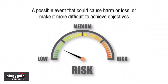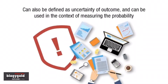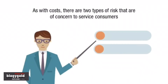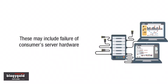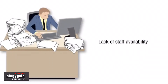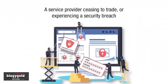Risks are defined as a possible event that could cause harm or loss, or make it difficult to achieve objectives. Risk can also be defined as uncertainty of outcome, and can be used in the context of measuring the probability of positive outcomes as well as negative outcomes. As with costs, there are two types of risks that are of concern to service consumers: risks removed from a consumer by the service — part of the value proposition, such as failure of the consumer's server hardware or lack of staff availability — and risks imposed on a consumer by the service. An example of the latter would be a service provider ceasing to trade or experiencing a security breach.